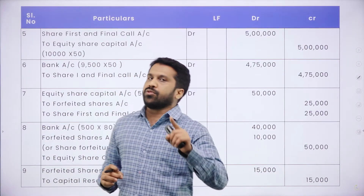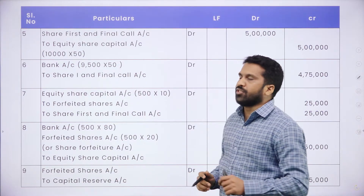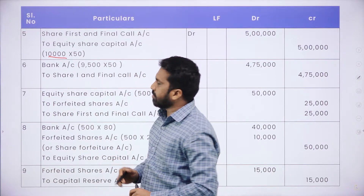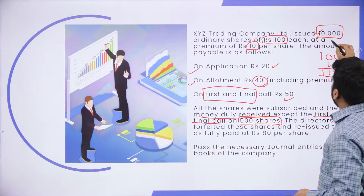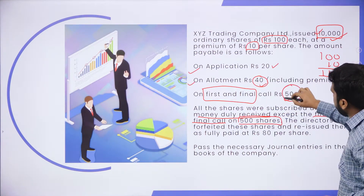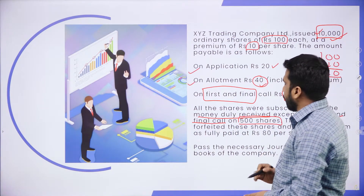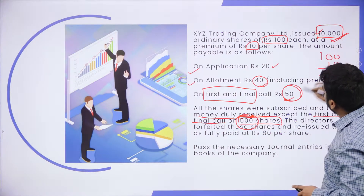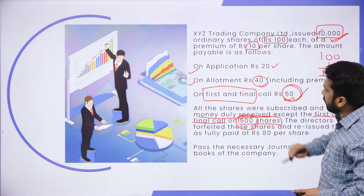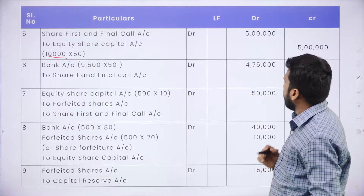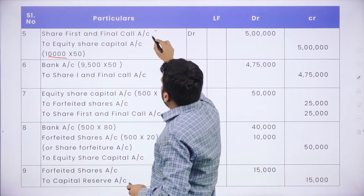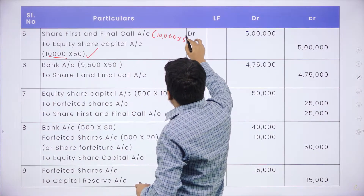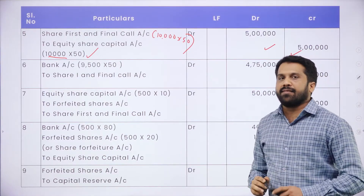Now, share first and final call journal entries. First: Share First and Final Call Dr. to Share Capital — 10,000 × ₹50 = ₹5,00,000. Both sides carry ₹5 lakh.